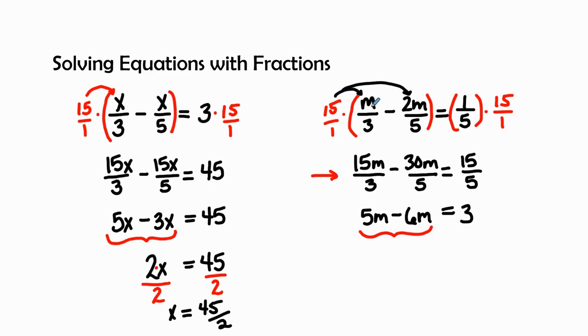15 times m is 15m divided by 3 is 5m. That will come in practice. So it might be a little bit easier going from fractions to having no fractions by skipping this middle step. So 5m minus 6m is a negative m equals 3.